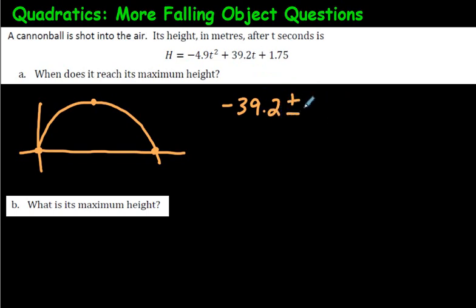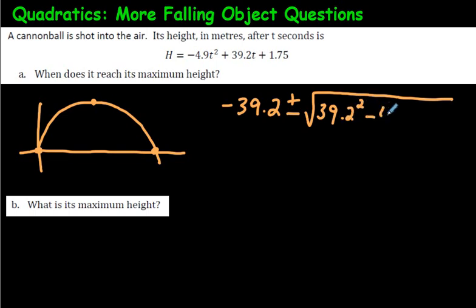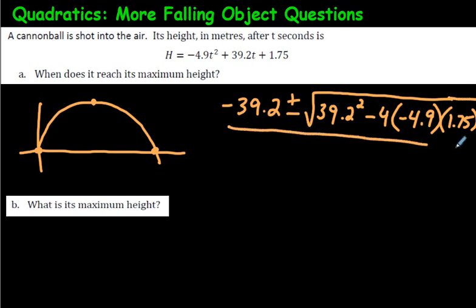Then we have b squared, which is 39.2 squared, minus 4 times a times c, where a is negative 4.9 and c is 1.75. We take the square root of all of that, then divide by 2a, which is 2 times negative 4.9. It's a lot more work than that quick technique, but we're going to find the two x-intercepts, or the two zeros.